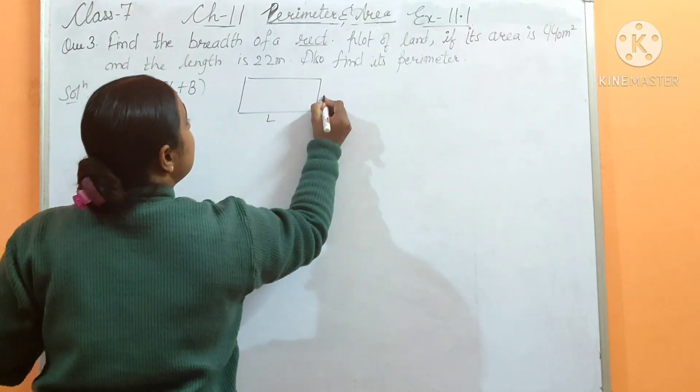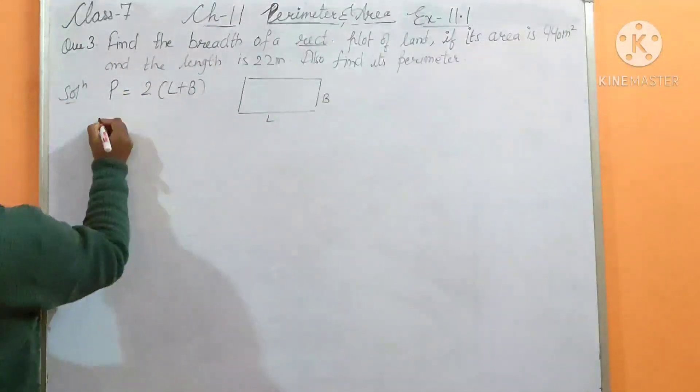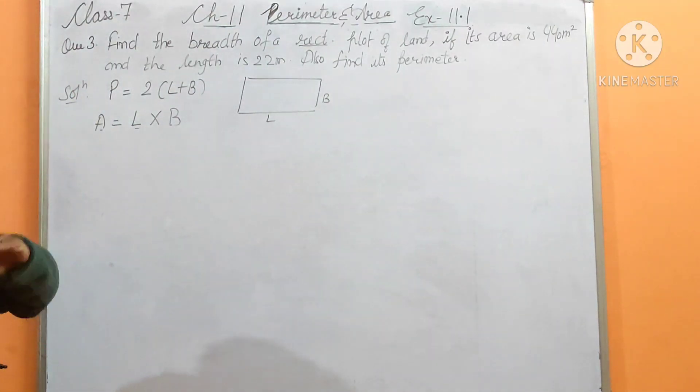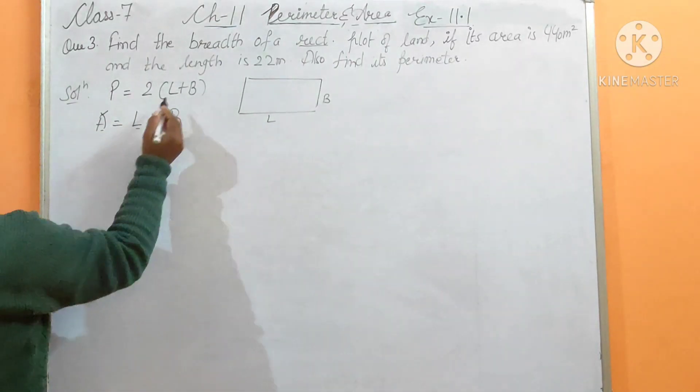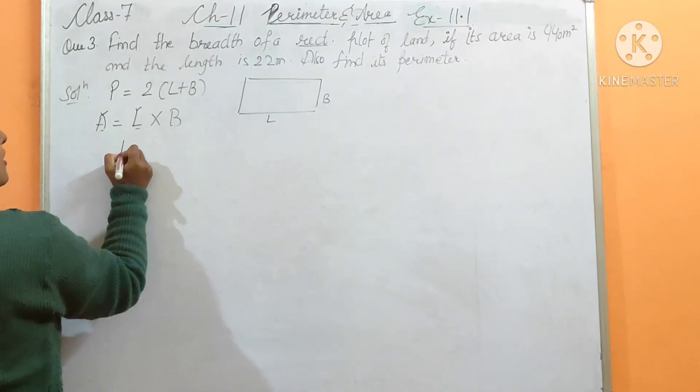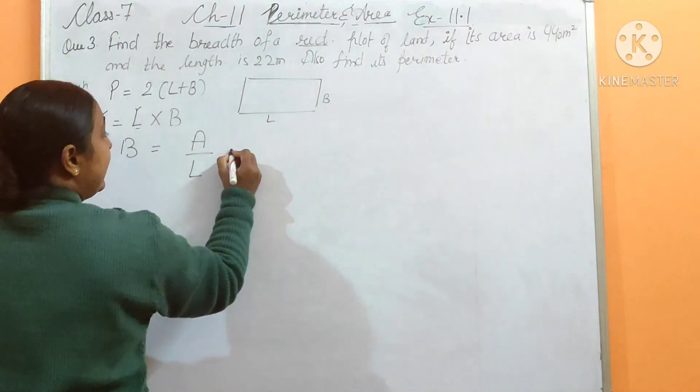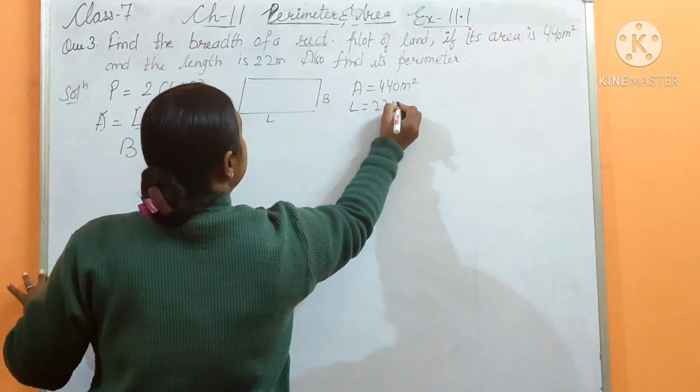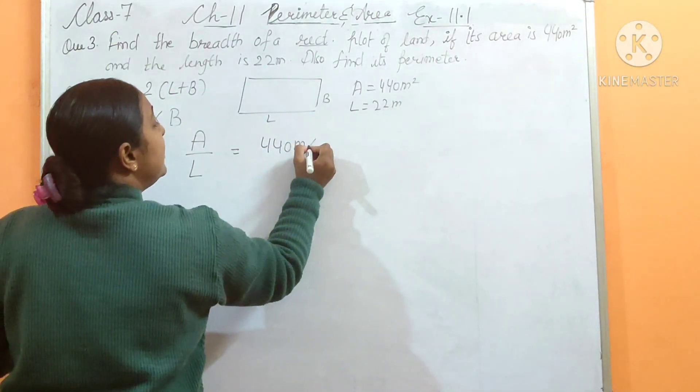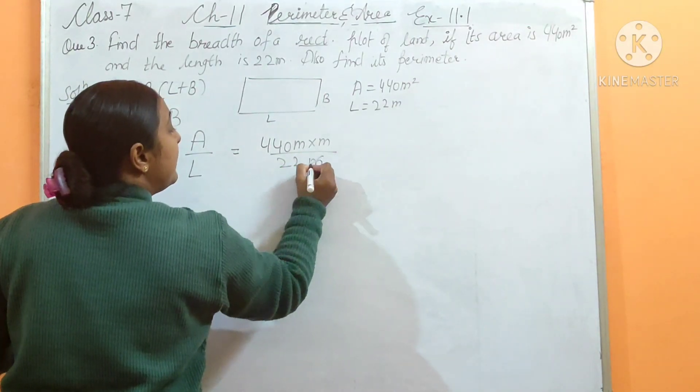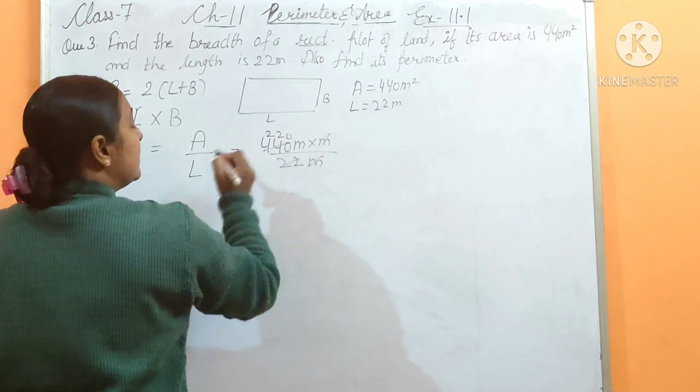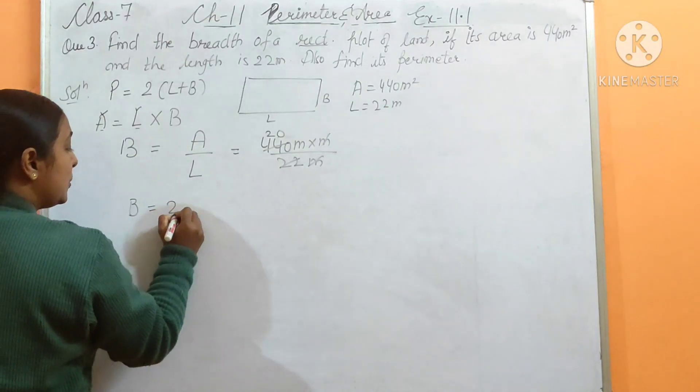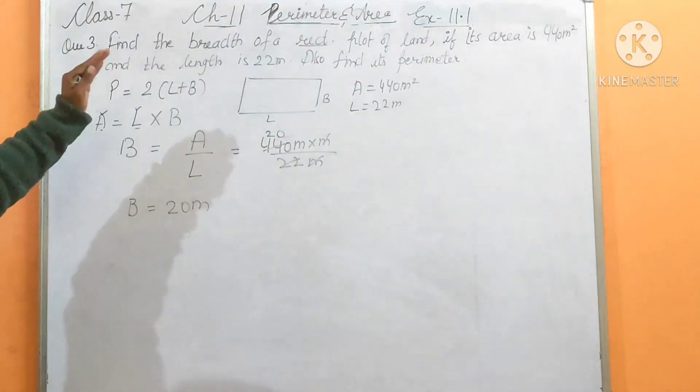This is L, this is B. But what is given? Area is given. The area formula is length into breadth. We have three contents - two need to be known so we can find the third unknown. I know area and I know length, so I can find breadth. The breadth formula becomes B equals A upon L. A is given as 440 meter square and L equals 22 meters. So breadth equals 440 divided by 22, which equals 20 meters. Now I have the breadth.